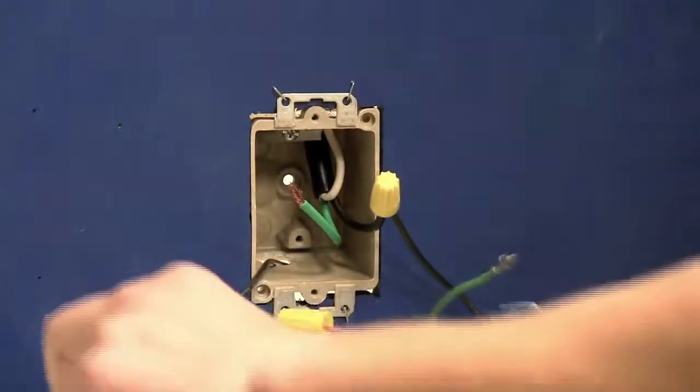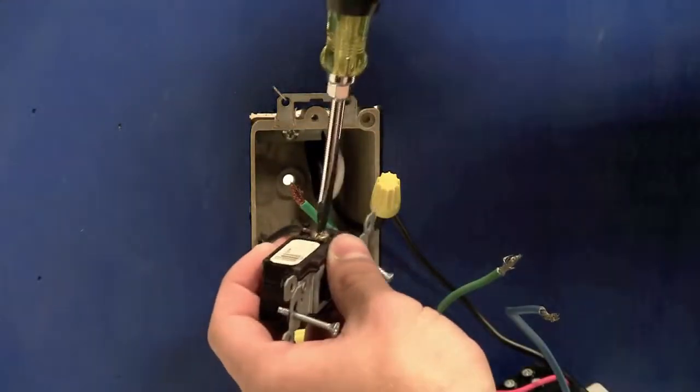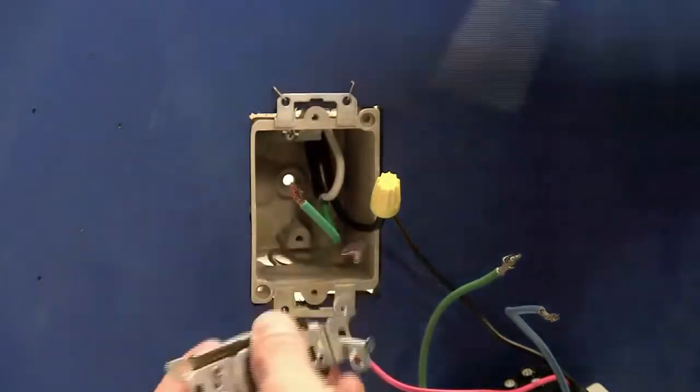We will remove the remaining wire from your regular wall switch and connect it with the blue wire on the timer.